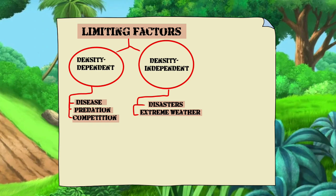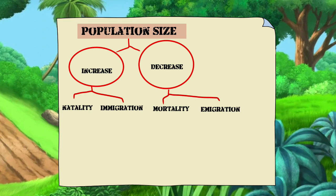Population size is the number of individuals in a population. The increase of it affects the natality and immigration, and when it decreases, it also affects the mortality and immigration.